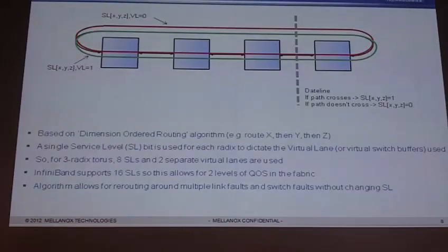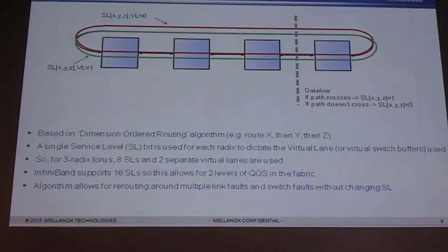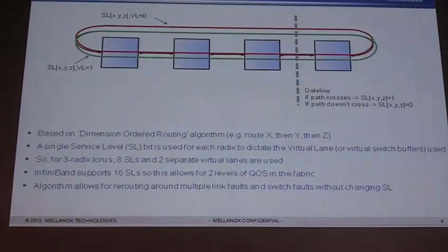For a three-radix torus, I use three bits, so I use eight service levels and two separate virtual lanes — always VL zero or VL one. InfiniBand supports up to 16 service levels; I'm using eight. This allows me to take eight service levels for one level of QoS and eight service levels for another level of QoS — that's where the name Taurus 2QOS comes from. I could put compute traffic on one layer, service levels zero through seven, and storage traffic on the other, keeping those traffics completely separate.